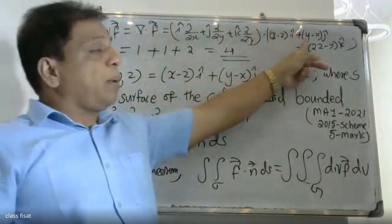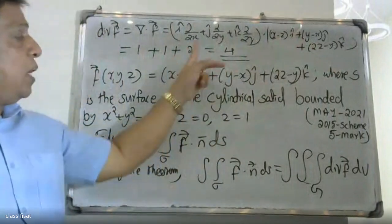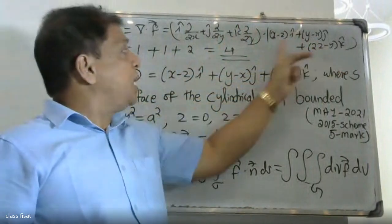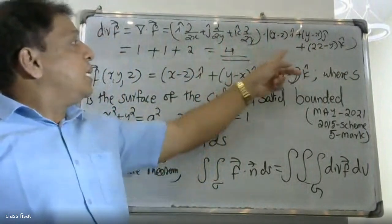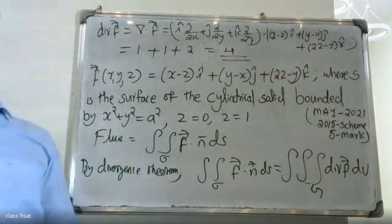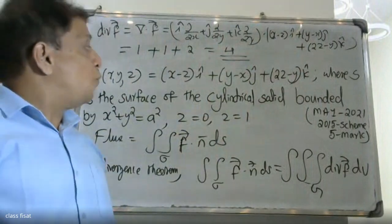The partial derivative with respect to x of (x minus y) is 1, the partial with respect to y of (y minus x) is 1, and the partial with respect to z of (2z minus y) is 2. So the divergence equals 1 plus 1 minus ... we will get divergence equal to 2.